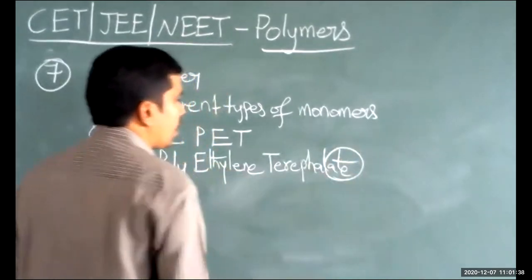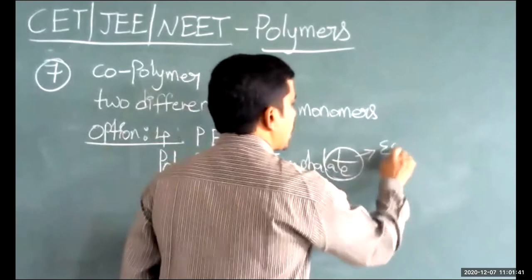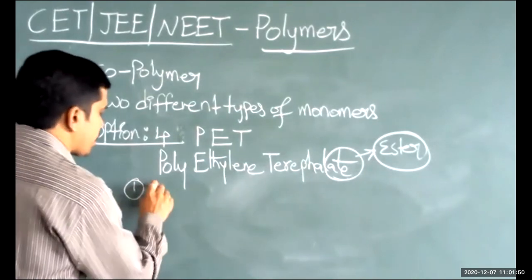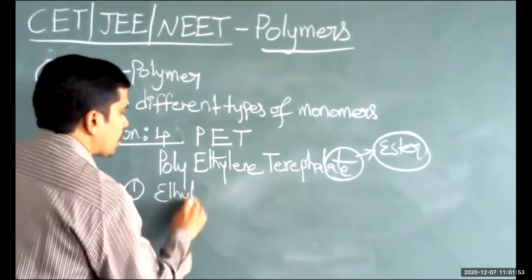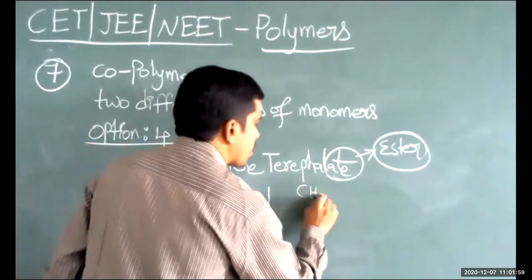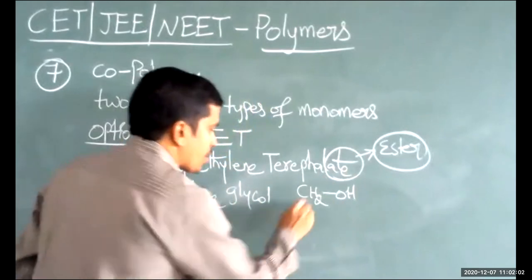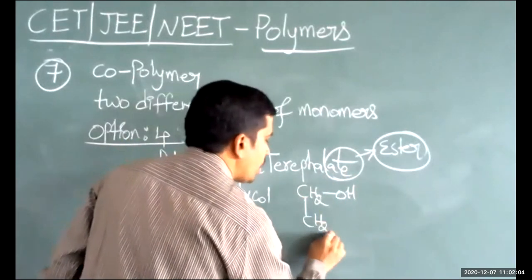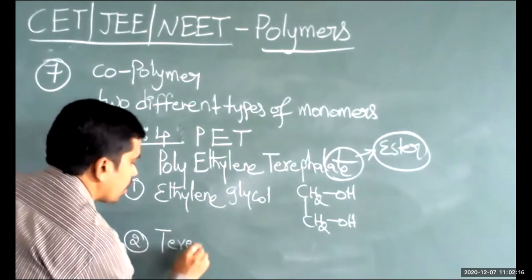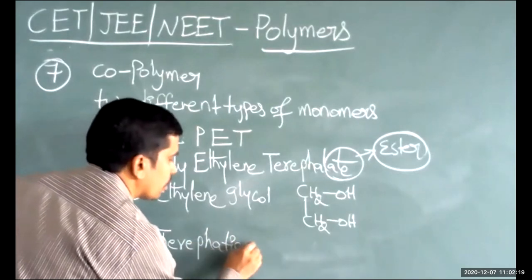The suffix '-ate' indicates it is an ester. PET is an example of an ester, and it contains two different types of monomers. The first monomer is ethylene glycol, represented as HO-CH₂-CH₂-OH. The second monomer is phthalic acid.